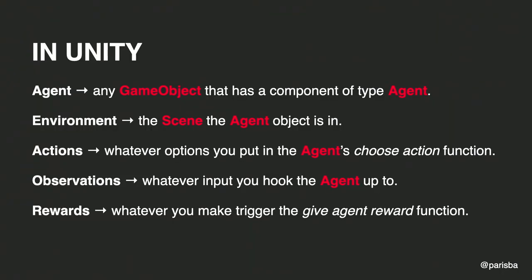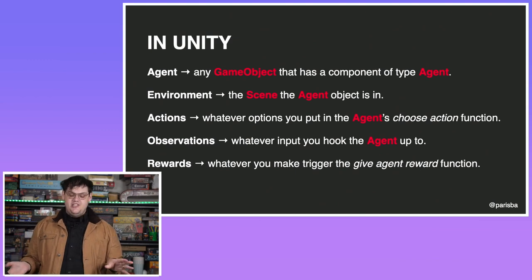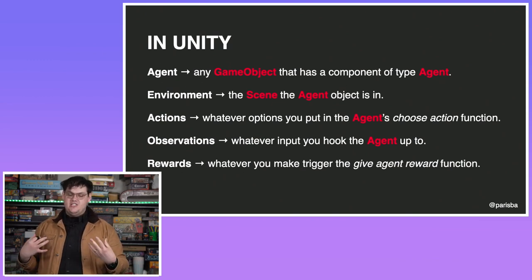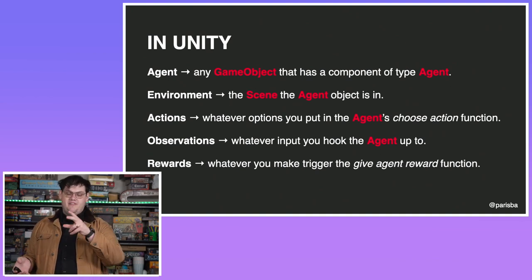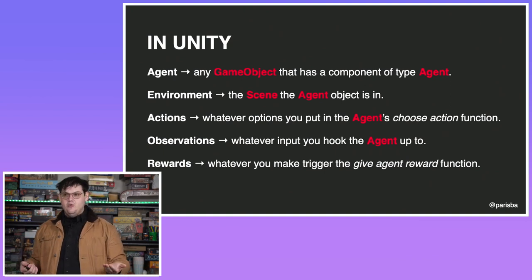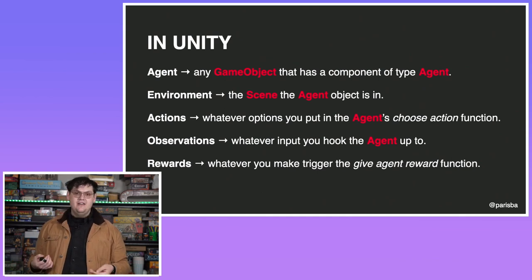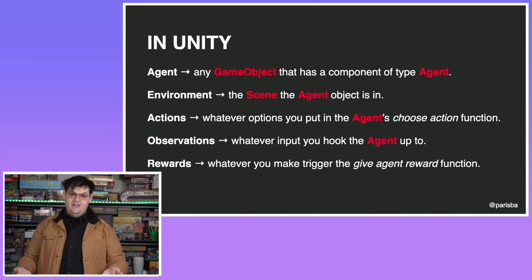In Unity, an agent can be any game object. Using ML Agents you make it descend from Agent and give it a component type of Agent. An environment is just a Unity scene wherever your agent lives. Its actions are whatever actions you give the agent — discrete actions like move forward, move left, move right, move backwards, or a continuous spectrum of numbers representing position. Observations are whatever input you give the agent: specific numbers like velocity or angular velocity, a camera, a raycast, or a specific measurement of something. Rewards are just a number — you literally say add reward or set reward and give it a number. Bigger is better, negative is bad.